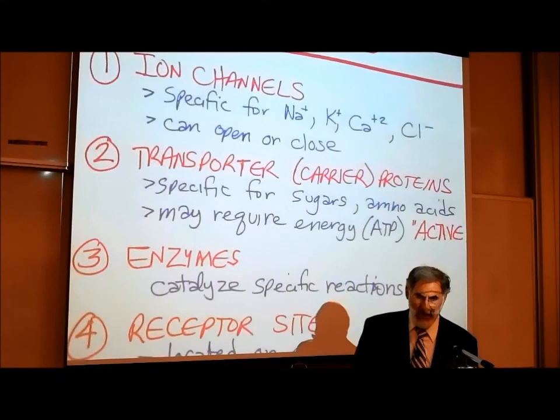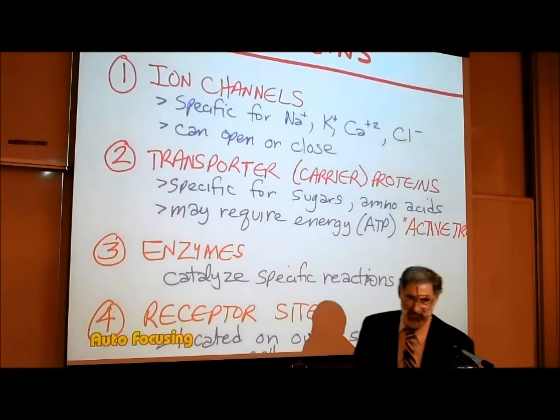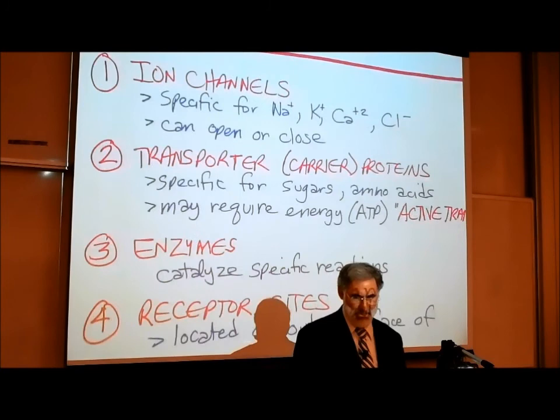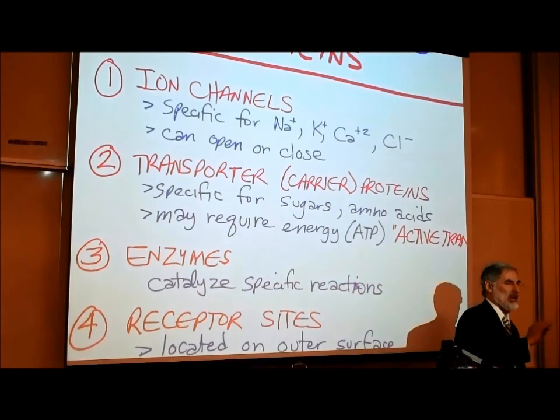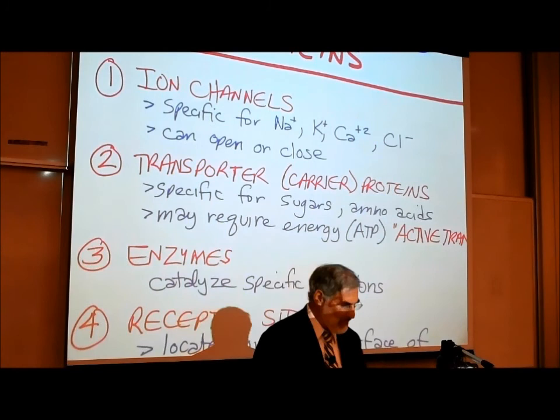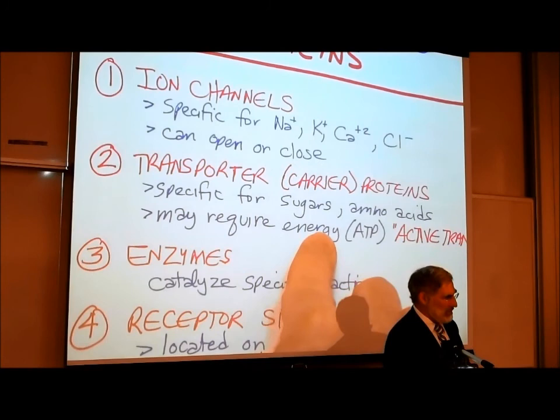Some of these proteins in the cell membrane are called transporter or carrier proteins. They help transport sugars and amino acids into a cell and are specific — proteins that transport sugars are different from those that transport amino acids. If the transporter protein requires energy to transport a chemical, it's called active transport.